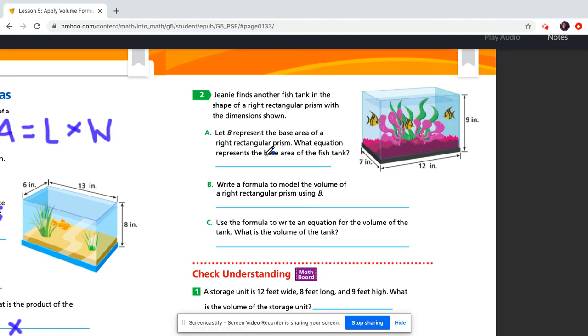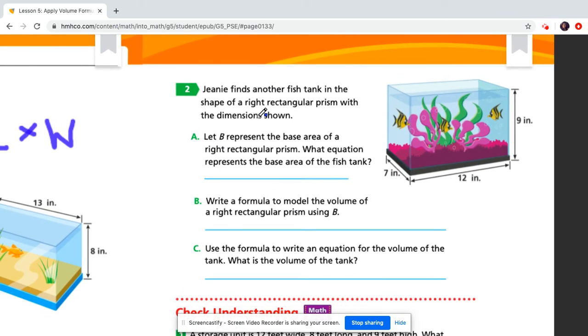Number 2 is very similar. The only thing for number 2, and we'll go through it a little quickly, and then we'll talk more about it at 11:30 a.m. today for our video conference. So, Jeannie finds another fish tank in the shape of a right rectangular prism with a dimension shown. So, here's another one. It says, let B represent the base area of this right rectangular prism. So, it's saying that B, so whenever you write a formula now, it's going to ask you to have B represent the answer.